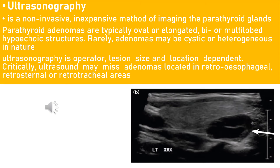For ultrasonography, it is a non-invasive, inexpensive method of imaging the parathyroid glands. Parathyroid adenomas are typically oval, elongated, bi- or multi-lobed hypoechoic structures. Rarely, adenomas may be cystic or heterogeneous. The specificity and sensitivity are similar to that of sestamibi. However, ultrasonography is operator-, lesion-, size-, and location-dependent. Critically, ultrasound may miss adenomas located in the retroesophageal, retrosternal, or retrotracheal area. The image shows a hypoechoic mass within the parathyroid gland — a parathyroid adenoma.